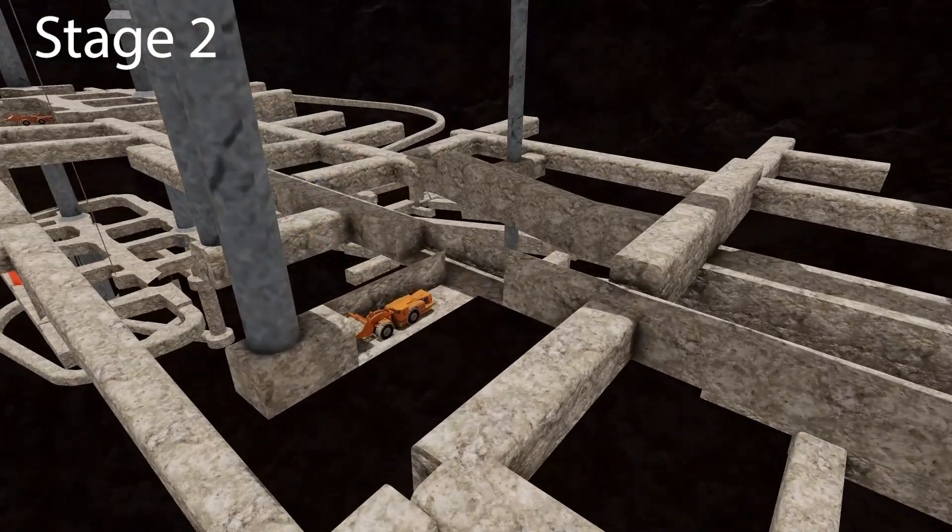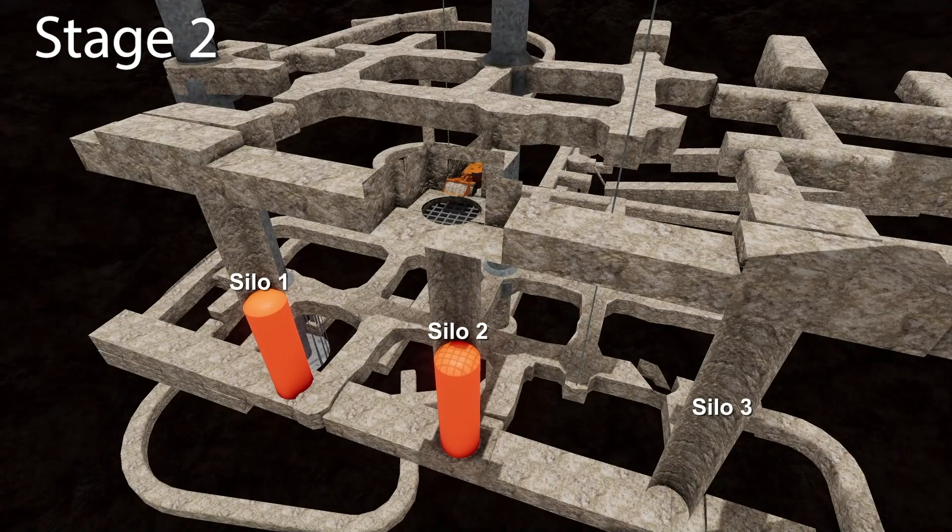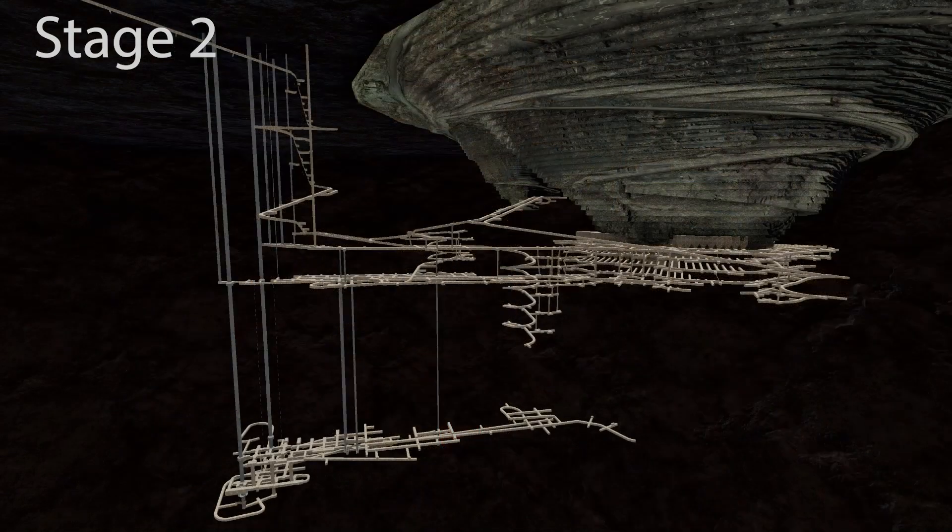Ore and waste will be drawn from passes with autonomous loaders and tipped into silos before being hoisted to surface. Stage 3.